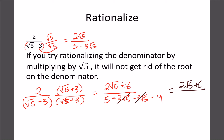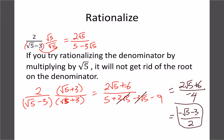After foiling, the negative 3√5 and positive 3√5 terms cancel on the bottom, leaving 5 minus 9, which is negative 4. So we have 2√5 plus 6 over negative 4. We can divide out by negative 2 — dividing 2, 4, and 6 — giving us negative √5 minus 3 over positive 2. It's good habit to keep the negative off the bottom.